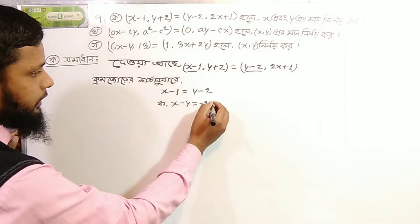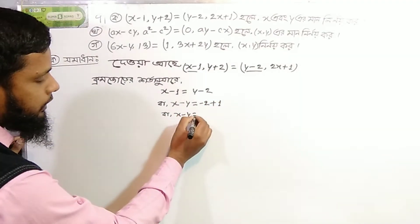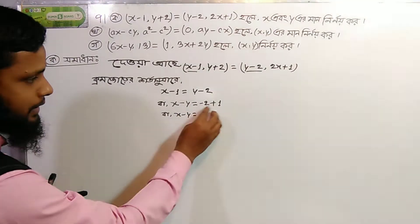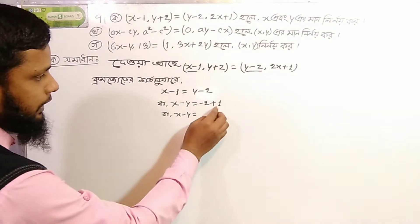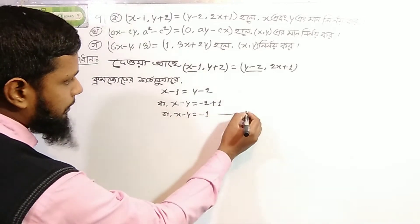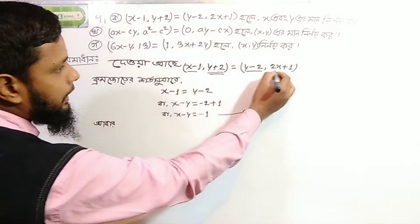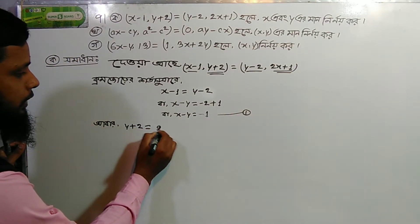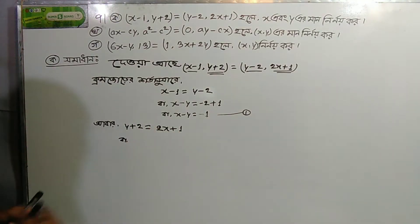So we have our equation. We take y plus 2 plus 2x plus 1. Like this, we are going to get y plus 1.